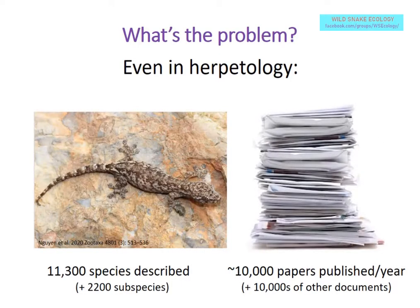There are probably about 10,000 papers published per year on reptiles, and there may be tens of thousands of other documents. In the Reptile Database, we collect about 2,000 of those 10,000. We usually ignore papers about ecology, behavior, or physiology, and try to focus on the taxonomic literature, which is about a fifth of all papers published per year.